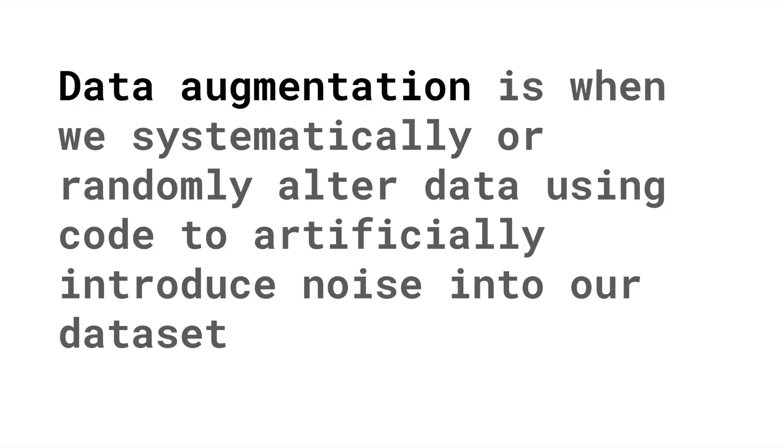As I mentioned in the beginning, we are often limited by how much data we can collect, and this is where data augmentation comes in. It is when we systematically or randomly alter data using code, allowing us to artificially introduce noise. Even if we've managed to collect a robust dataset, this additional layer of noise can be beneficial. Augmentation also allows us to increase the size of our dataset, which can be particularly useful for deep learning as it helps the model parameters converge.